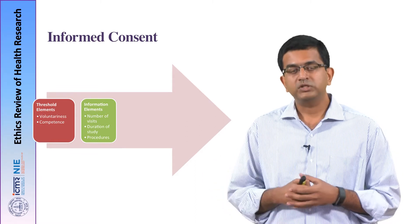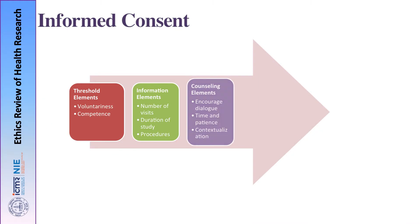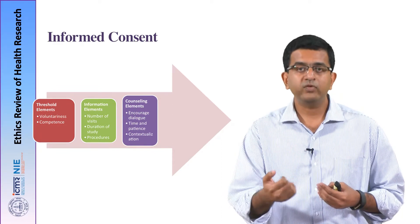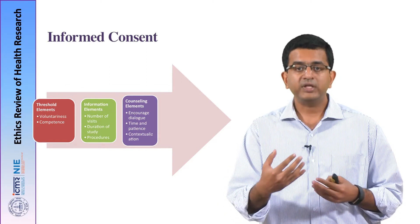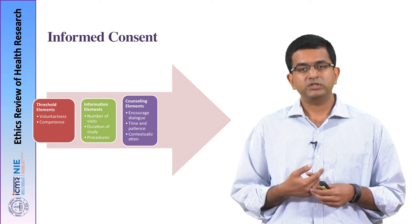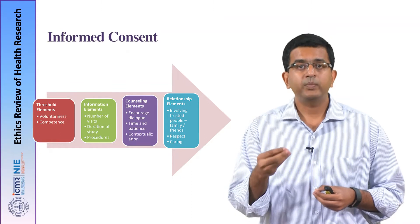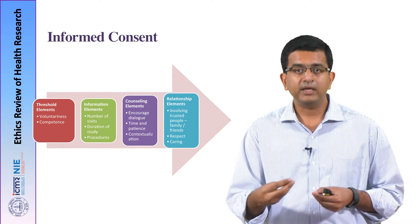The following two elements do not directly relate to technical aspects but are more relational. The third element is the counselling element — the informed consent process is not just a one-way communication or merely delivering facts to a competent individual, but a process of two-way counselling. The researcher provides information, the participant listens, understands, engages, asks questions, and clarifies. The fourth is the relationship or trust-building element, where trusted people for the research participant — like family members, friends, and well-wishers — are involved in the consenting process so they get engaged with it.